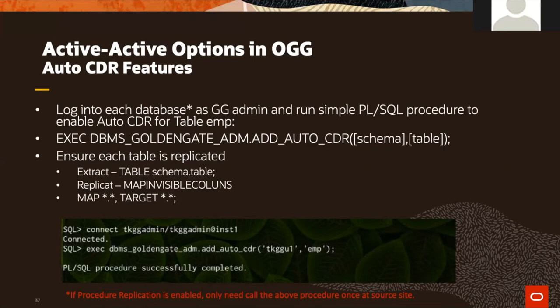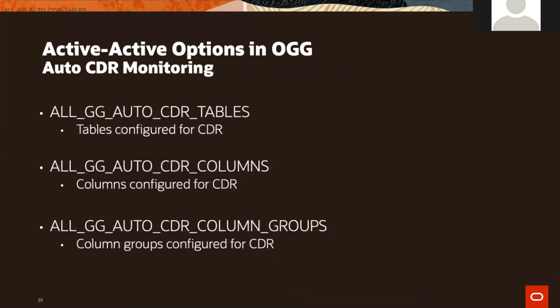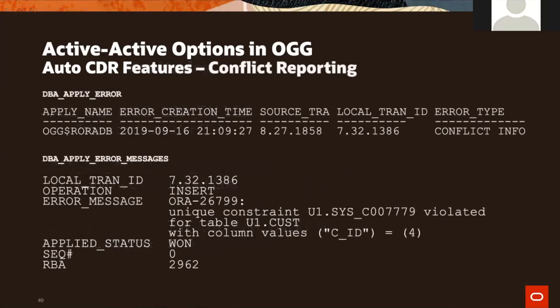Once auto CDR is enabled, Golden Gate manages the invisible timestamp column by itself and uses it for time-based conflict detection in active-active configurations. You can also record conflicts when they occur by querying specific views. After executing the DBMS_GOLDEN_GATE.ADM.ADD_AUTO_CDR procedure, certain views become available — DBA_GG_CDR_TABLES, DBA_GG_CDR_COLUMNS, and column groups — allowing you to query and find out what conflicts occurred and how they were resolved.